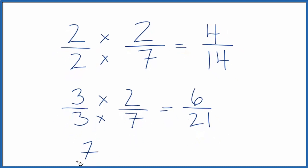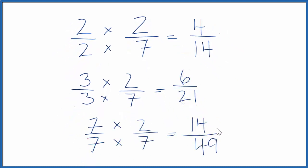One last one. How about 7 over 7? So 14 over 49, that's an equivalent fraction to 2 sevenths.